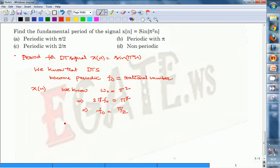A rational number should be in integer by integer form, but here π is not an integer.